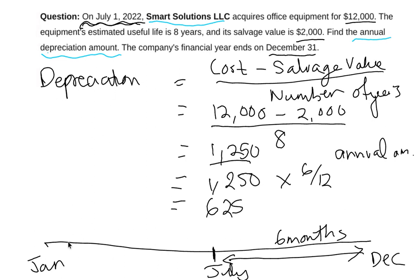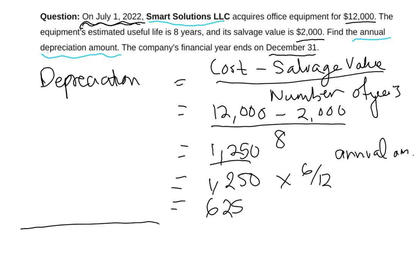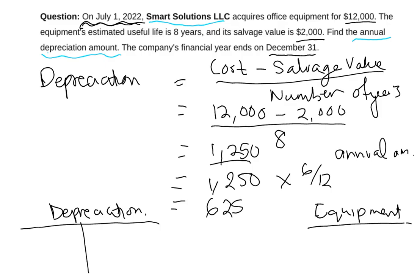Now let's look at how we account for this depreciation using T-accounts. When preparing the accounts and adding entries to your ledgers, we have one account for depreciation — which is an expense — and we also have an equipment account and an accumulated depreciation account.